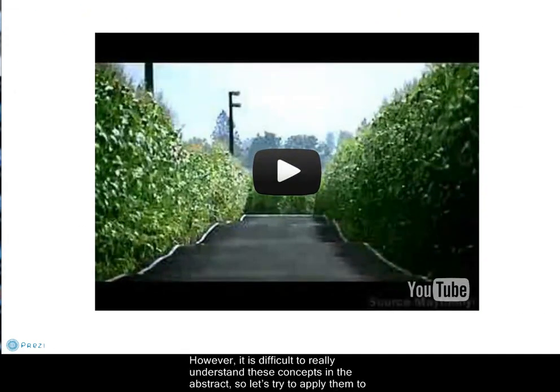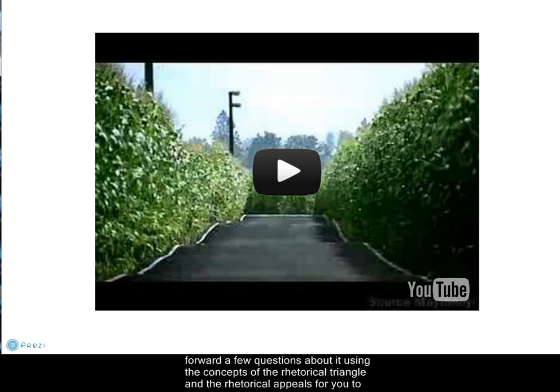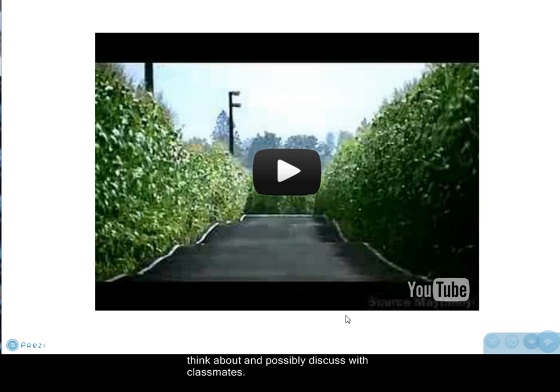However, it is difficult to really understand these concepts in the abstract, so let's try to apply them to an actual text to see how they can immediately help us begin to analyze how that text is working. First, let's watch this Ford Mustang commercial, which we know is meant to be persuasive since it's an advertisement, and then we will put forward a few questions about it using the concepts of the rhetorical triangle and the rhetorical appeals for you to think about and possibly discuss with classmates.